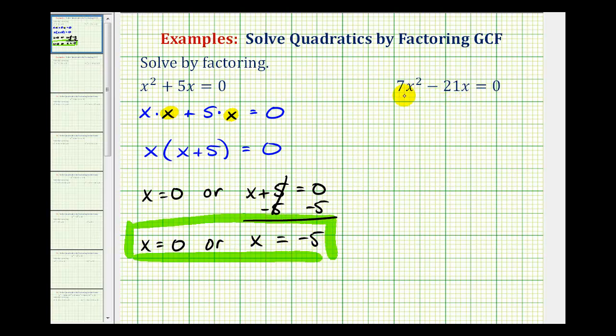Looking at our second example, we have 7x squared minus 21x equals zero. Again, the first step is to factor out the greatest common factor of these two terms, which would be 7x.